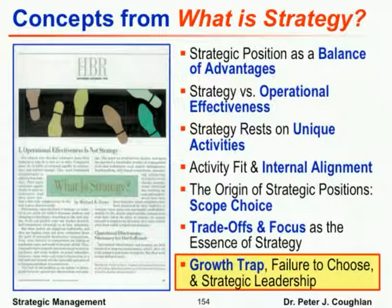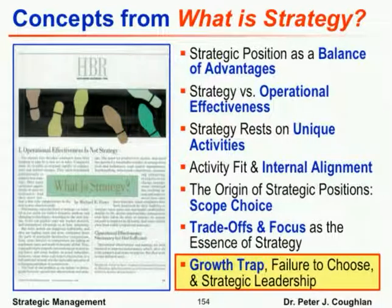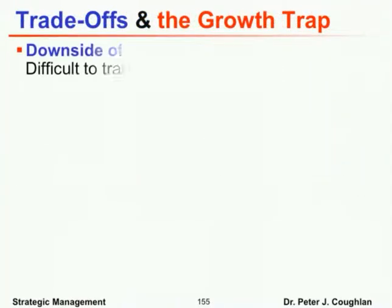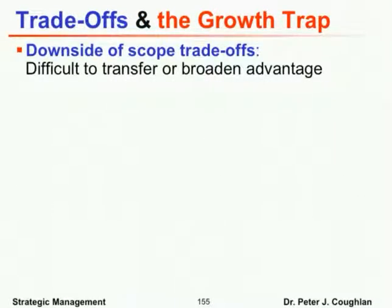That leaves us the last bullet point in the 'What is Strategy?' reading: the growth trap and by implication the failure to choose and the idea of strategic leadership. Some of these lessons will carry over to the idea of continuity and leadership in the next module. The downside of scope tradeoffs is that it can be difficult to transfer your advantage broadly.